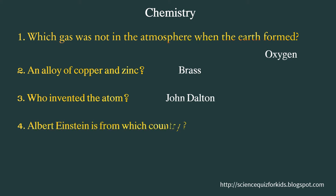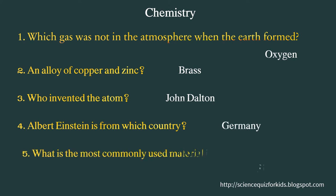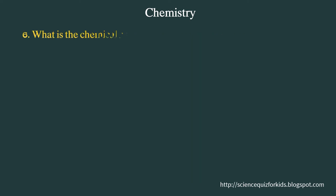Albert Einstein is from which country? Germany. What is the most commonly used material in a transistor? Silicon. What is the chemical name of alcohol? Ethyl alcohol.